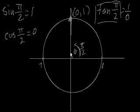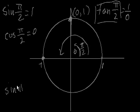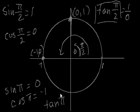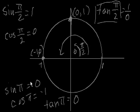Similarly, we can find the functions for when theta equals pi, which is 180 degrees. That's this point right here, which is (−1, 0). So sine of pi equals the y-coordinate, which is 0. Cosine of pi equals the x-coordinate, which is −1. And the tangent of pi equals y over x, so 0 over −1, which equals 0. Hopefully this makes sense. In the next module, I'll graph these points and you'll see how it all comes together and why it's useful to define the sine, cosine, and tangent functions this way. See you soon. Bye.